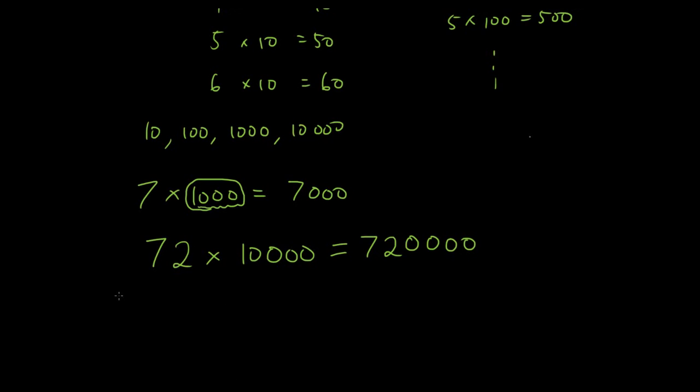Let's do another one. 736 times by 100,000. And that will be how many zeros are there? 1, 2, 3, 4, 5. So 7, 3, 6 and 5 zeros.